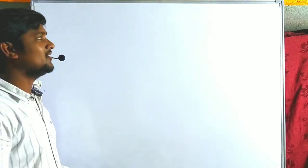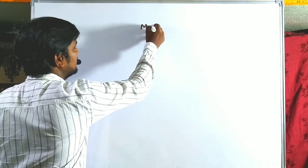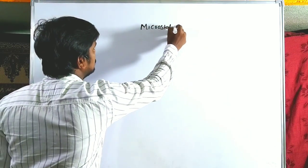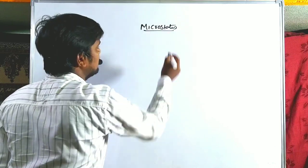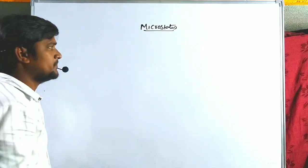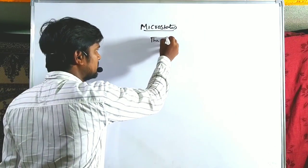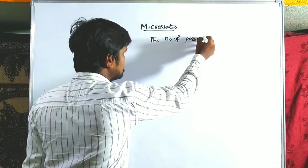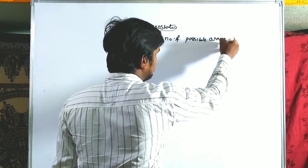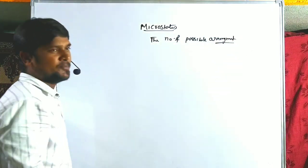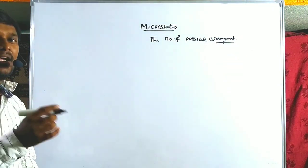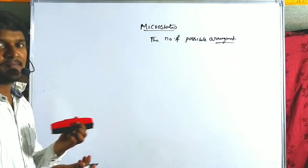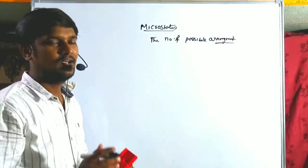Hi guys, welcome to RPV Resonance Chemistry. Now we are discussing the calculation of microstates in coordination chemistry. Microstates is nothing but the number of possible arrangements of electrons in an orbital.